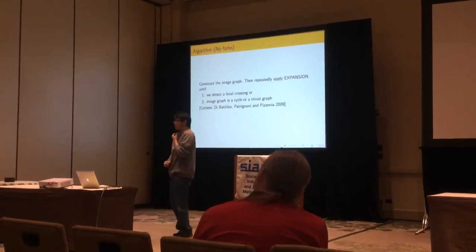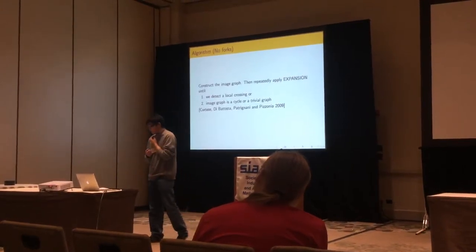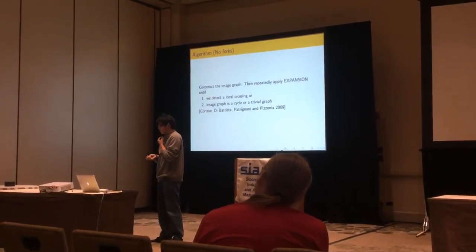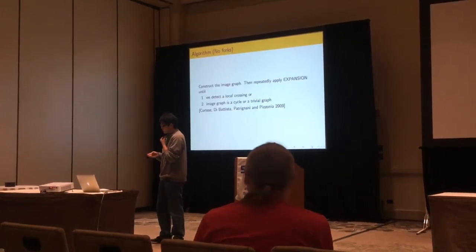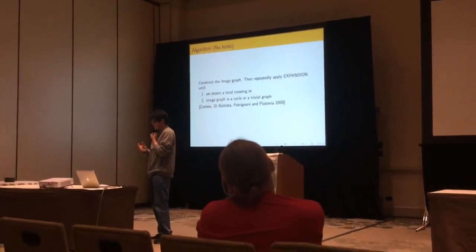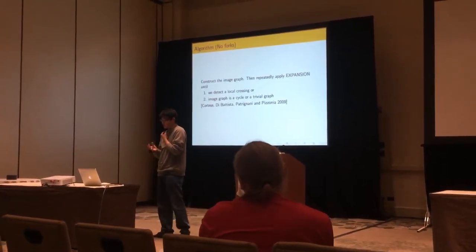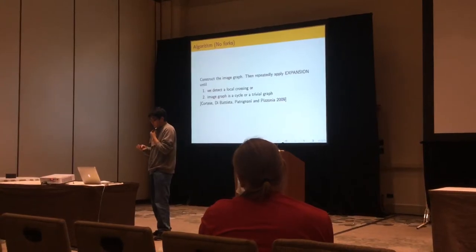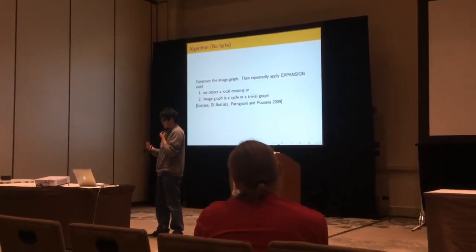So, let's assume there's no forks in the polygon. And with this assumption, we do the following algorithm. First, we construct the image graph. Then we repeatedly apply this operation called expansion. And we detect a local crossing at some point, then we know it's not weakly simple.